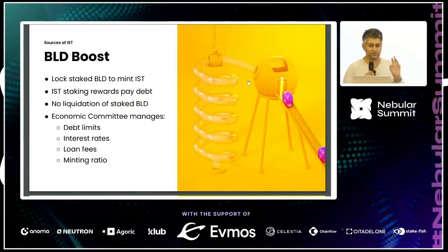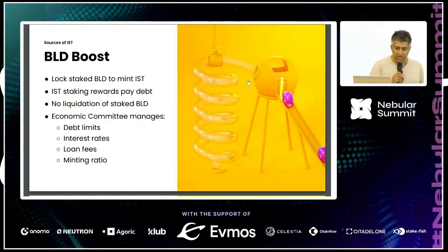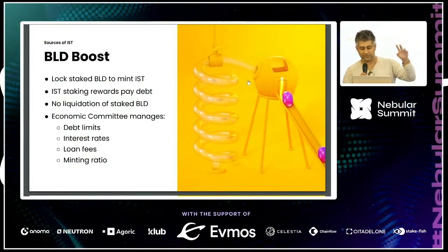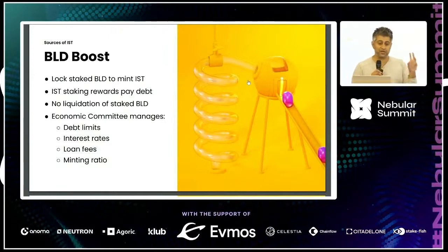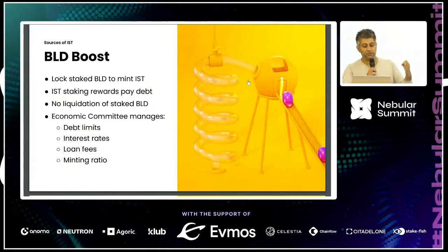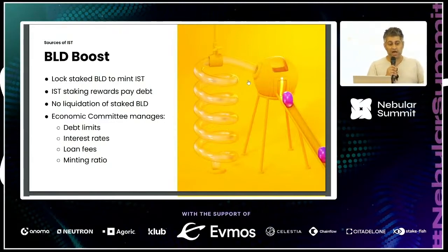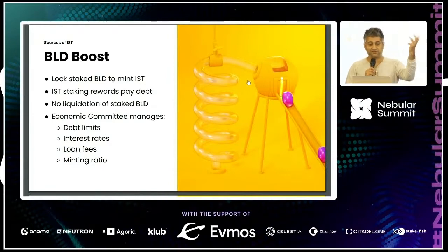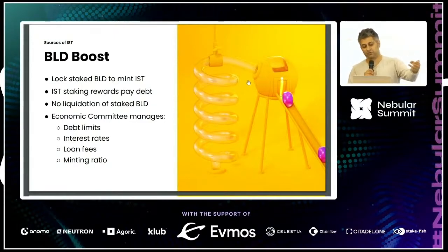BLD Boost is the thing that triggers everyone — you can lock the staking token and get IST. This sounds awful, like Terra/Luna. But it's completely different: the value here is expected to be really small. IST is native to the L1, a special enshrined stablecoin on the Agoric L1 run by BLD. As long as IST is functioning, there's going to be a steady stream of IST from fees going to BLD holders.